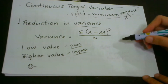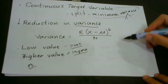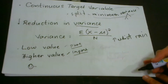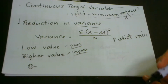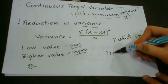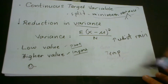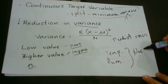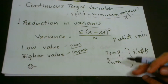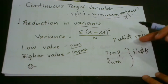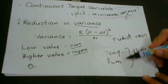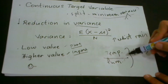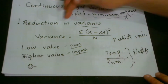For better understanding, let's consider a situation. Our problem is to predict the amount of rain for a certain period of a year. We have two features to use for prediction: temperature and humidity. These two variables are our choices for predicting the amount of rain. The question is: between temperature and humidity, which one is the best node on which we are going to split? To answer that, we'll use the technique of reduction in variance.